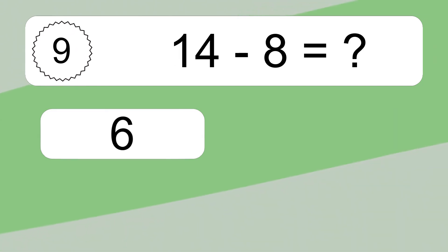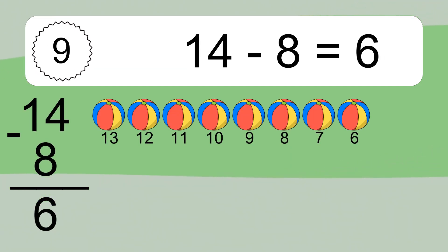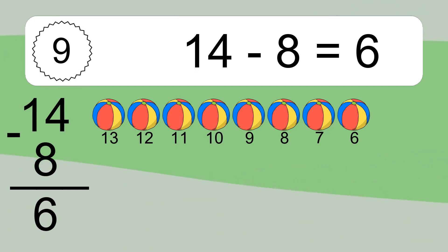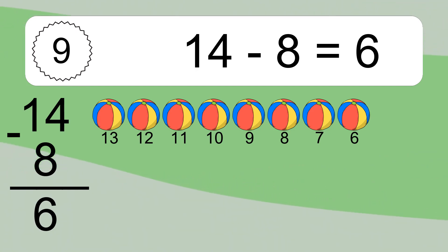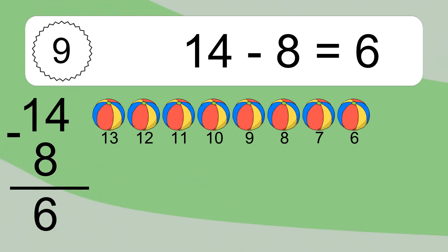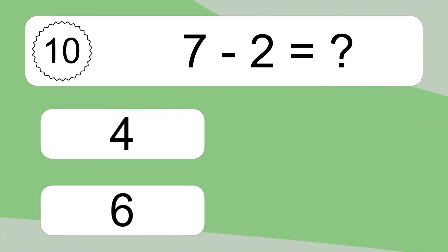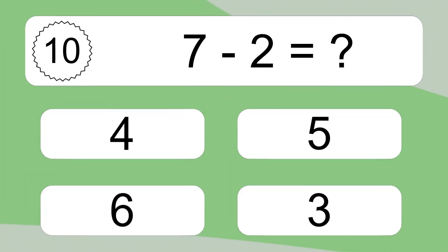14 minus 8 equals 6. Let's count it: 13, 12, 11, 10, 9, 8, 7, 6. 7 minus 2 equals what?